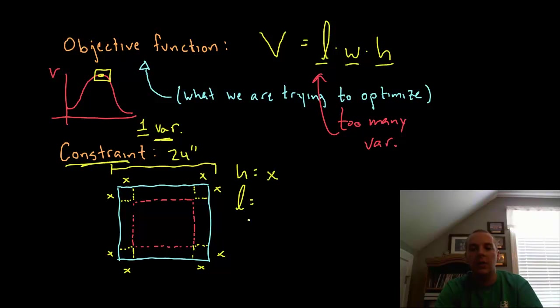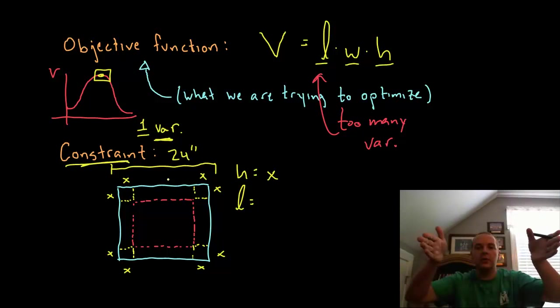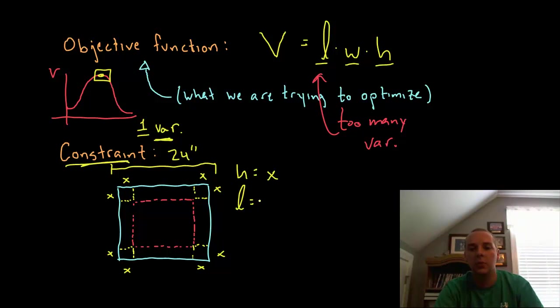The length is also in terms of x because if the original length is 24 inches long and you cut two corners, one out of the left and one out of the right, then the length of the base of the box will shrink to be 24 minus 2x. And since it's a square base, the width is also 24 minus 2x.